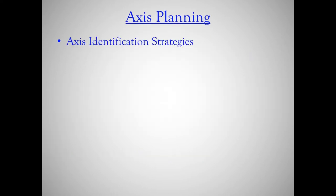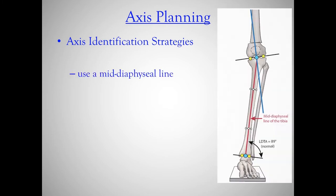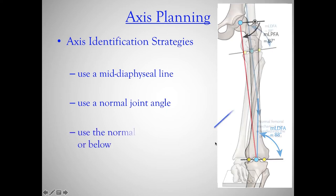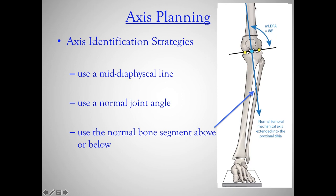Let's talk about the axis planning strategies. First, you can use a mid-diaphyseal line if the segment is big enough. If it's a small segment, you can subten or create a normal joint angle — as seen here with the very small segment in the distal femur — this is its axis by subtending a normal 88-degree LDFA. Or you can use a normalized or normal segment proximal or distal and extend that line into the next segment, marking the proximal segment of that bone.